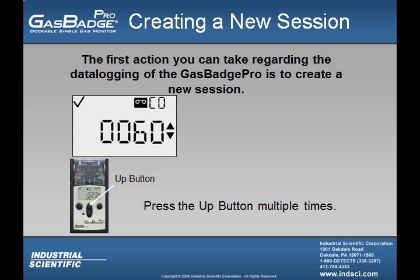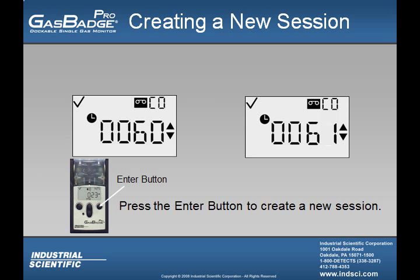The first option the user is able to access is creating a new data logging session. If the user is trying to create a new session, they must press the up button multiple times until they see the tape icon just like the one shown here. Once the user is at the data logging screen, they must press the enter button and they will see the numerical value go up, letting the user know that they have just created a new data logging session.